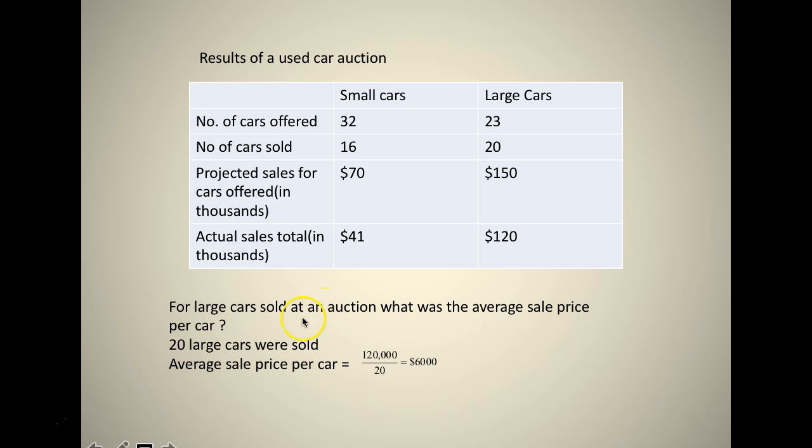The question is: for large cars sold at an auction, what was the average sale price per car? There were 20 large cars sold and the actual sales total is $120,000. So the average sales price per car would be 120,000 divided by 20, which is $6,000. That would be the answer.